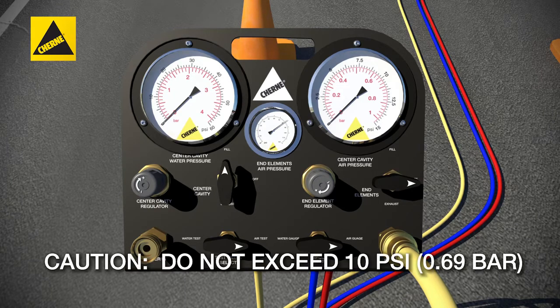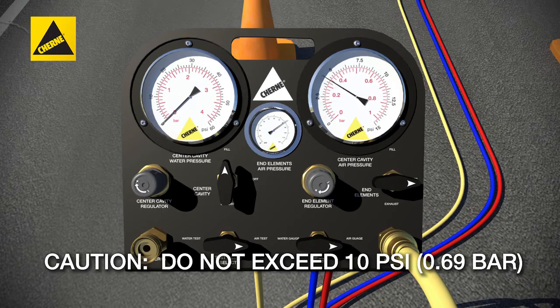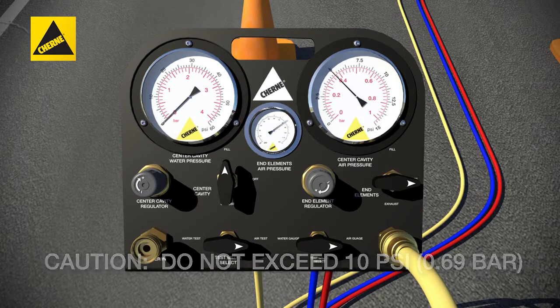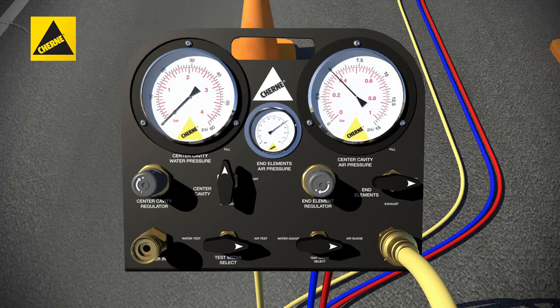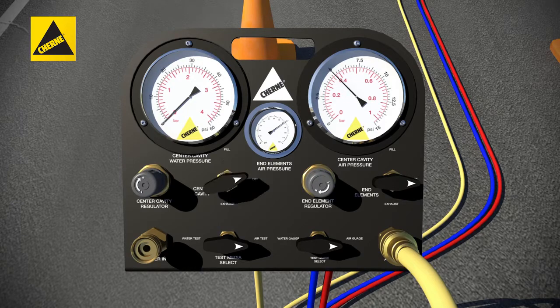Turn the test pressure regulator until the specified test pressure is indicated on the test pressure gauge. Place the test pressure three-way valve in the off position.